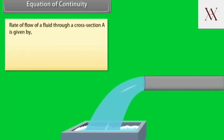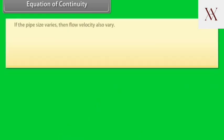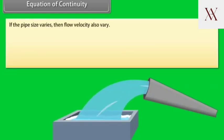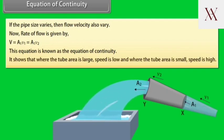Equation of continuity. Rate of flow of a fluid through a cross section A is given by V equals AV where V equals velocity of the fluid and capital V equals volume of the fluid. If the pipe size varies, then flow velocity also varies. Now, rate of flow is given by V equals A1V1 equals A2V2. This equation is known as the equation of continuity. It shows that where the tube area is large, speed is low and where the tube area is small, speed is high.